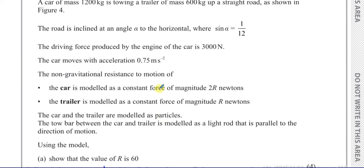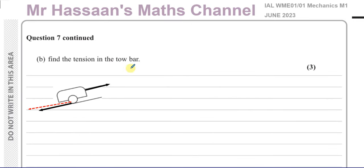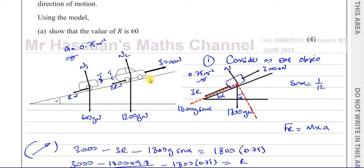Now part B: find the tension in the tow bar. To find the tension in the tow bar I can consider just the trailer or just the car separately — they're all moving with the same acceleration. Using the trailer would be more sensible because there are fewer forces acting on it, so I'll concentrate on the trailer.